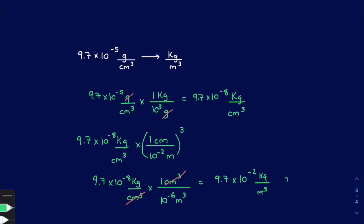Another way to express the answer is 0.097 kilograms over meters cubed. Remember: know how many conversions you have to do, do them one at a time, and if a unit is squared or cubed, set up the conversion first and then distribute that exponent to every single unit. Follow through with the calculation and you'll be fine — go ahead and practice these and you're going to do great.